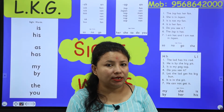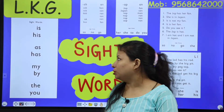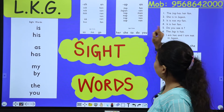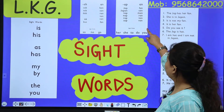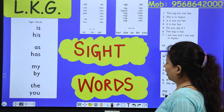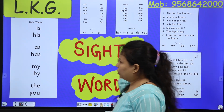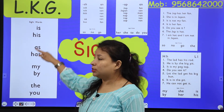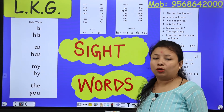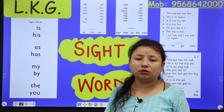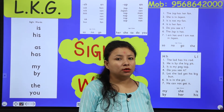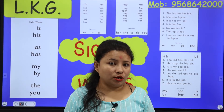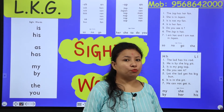Today we will read page number 6, page number 17, page number 23, 25, and 29. Here are some sight words. All these words are not spoken in phonetic sounds.